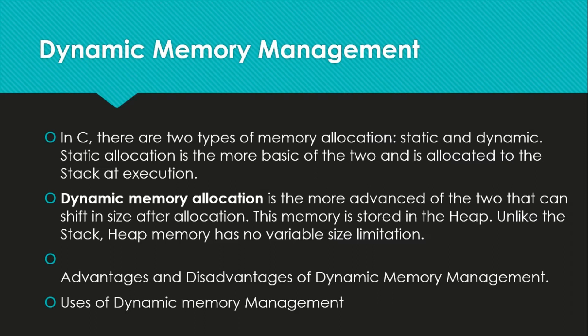In C programming, there are two types of memory allocation: static and dynamic. Static allocation is the more basic one and occurs at the stack. All the variables you simply define, for example int i equals two, the memory is given at the stack during execution.